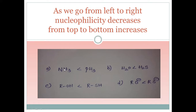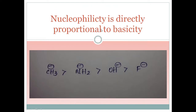Here, in PH₃, phosphorus is less electronegative compared to nitrogen in NH₃, so PH₃ is more nucleophilic than NH₃. Similarly, for H₂O and H₂S, sulfur is a bulkier group and less electronegative than oxygen, so H₂S is more nucleophilic than H₂O. We apply this similar concept to other comparable pairs as well.